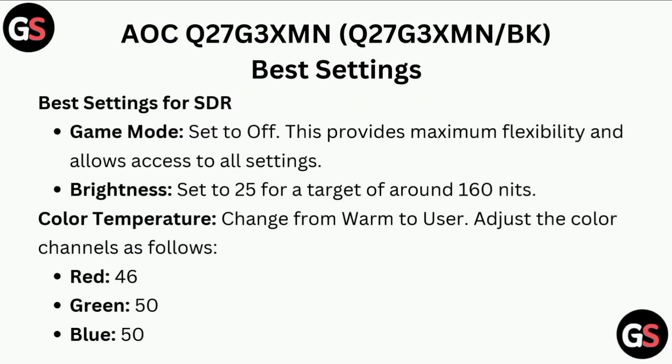For best settings with HDR off: set Game Mode to Off — this provides maximum flexibility and allows access to all settings. Set Brightness to 25 for a target of around 160 nits. Change Color Temperature from Warm to User, then adjust the color channels: Red 46, Green 50, Blue 50.